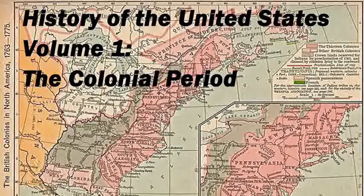This is a LibriVox recording. All LibriVox recordings are in the public domain. For more information or to volunteer please visit Librivox.org. History of the United States by Charles A. Beard and Mary Ritter Beard, Part 1, Section 4, Chapter 2: Colonial Agriculture, Industry and Commerce — The Land and the Westward Movement.